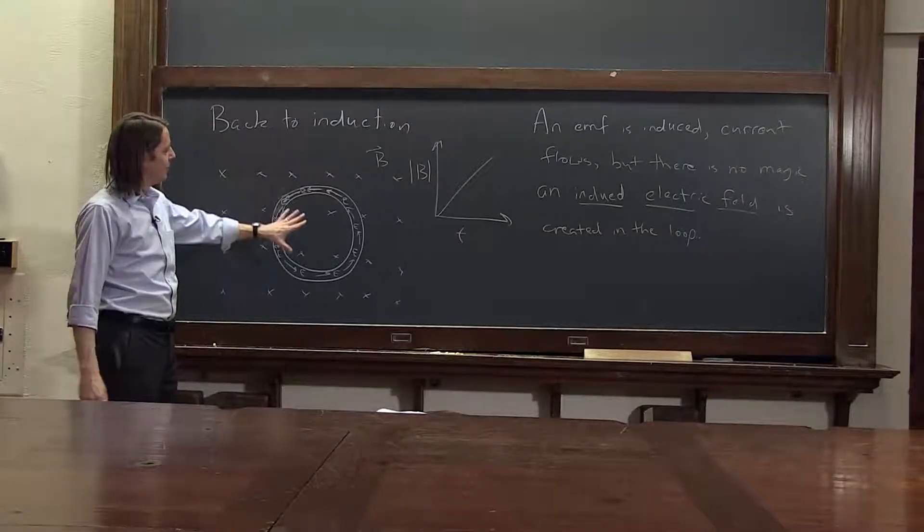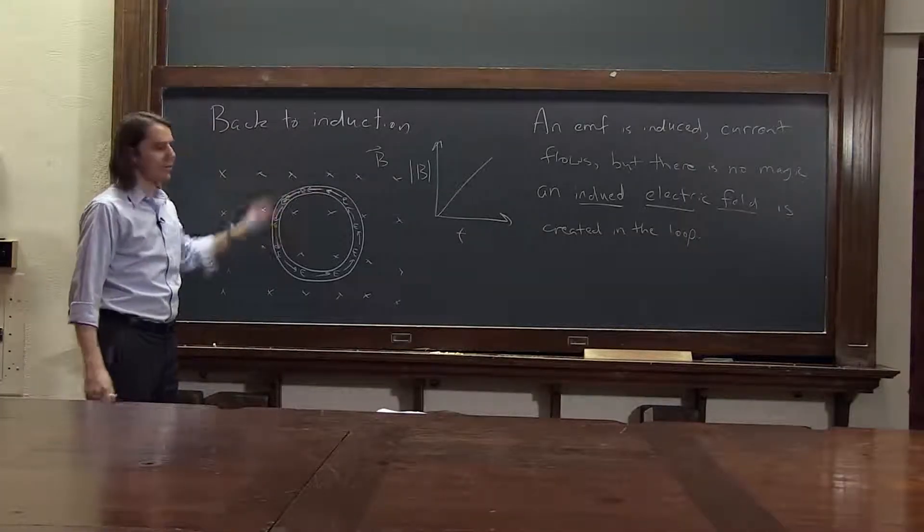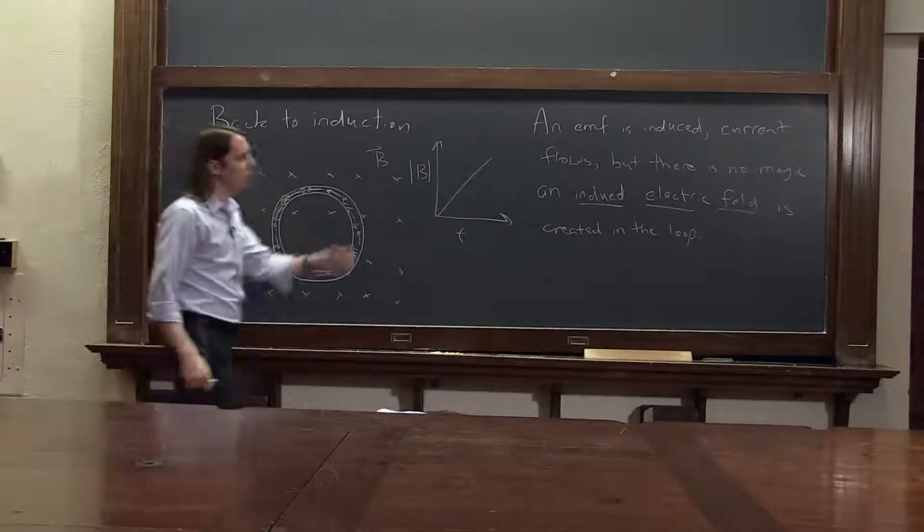A changing magnetic field actually creates an electric field inside the loop, an induced electric field.